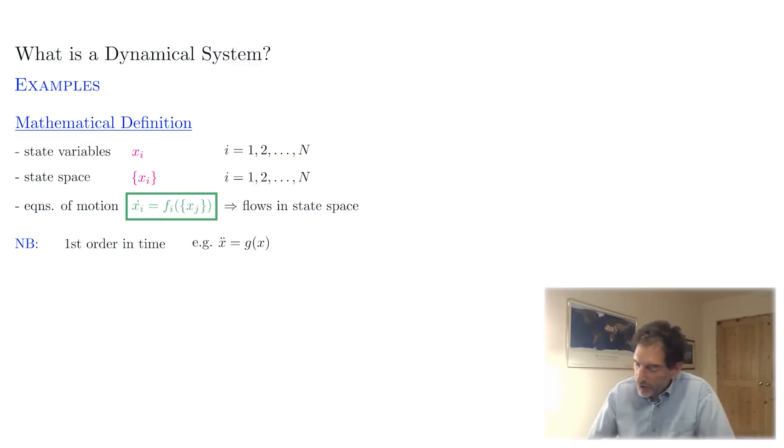To reduce this to first order, we let x dot equals y. And then from this we get the following equation of motion: x dot equals y, and y dot, which is x double dot, is g of x. So we've reduced a one variable second order equation into a two variable first order system.